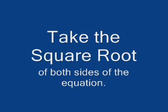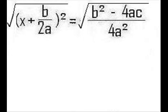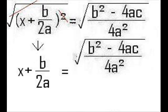And now to solve for x, we need to take the square root of both sides. This will cancel out the power of 2 on the left hand side of the equation, leaving us with x plus b over 2a.